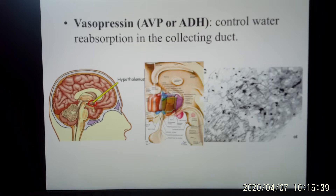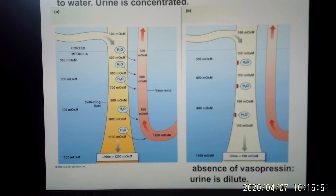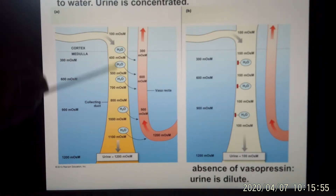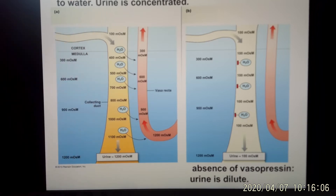This hormone goes to the kidney and regulates water reabsorption in the last 80% of the nephron — that's where it's regulated. So let's see what happens. Vasopressin regulates water reabsorption in the distal tubule.